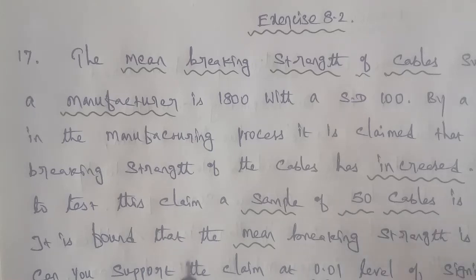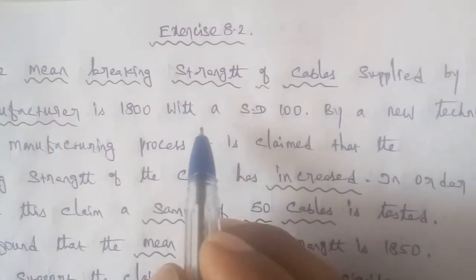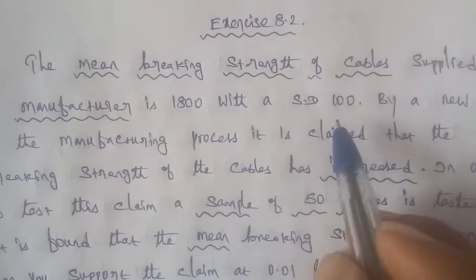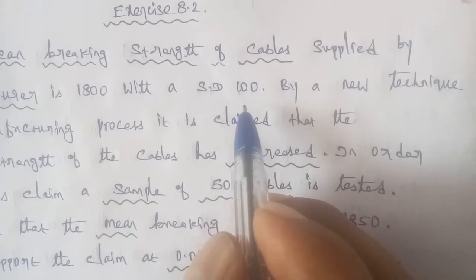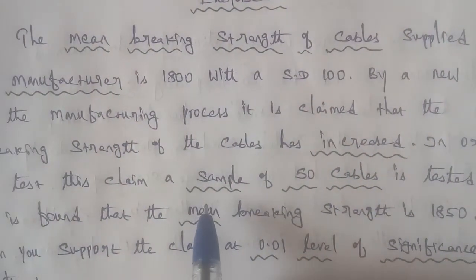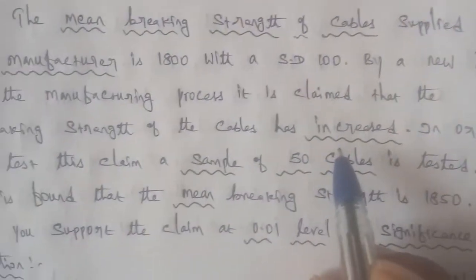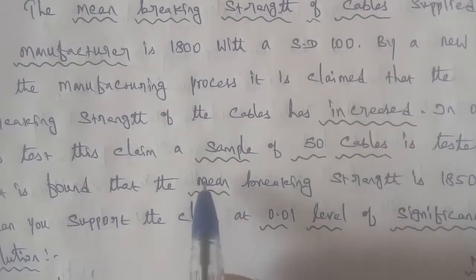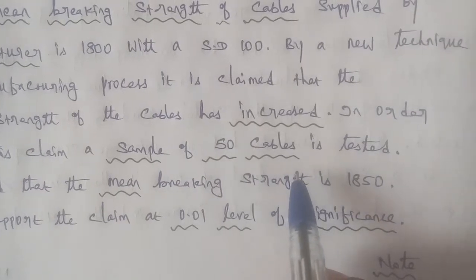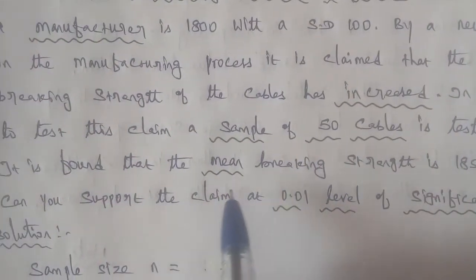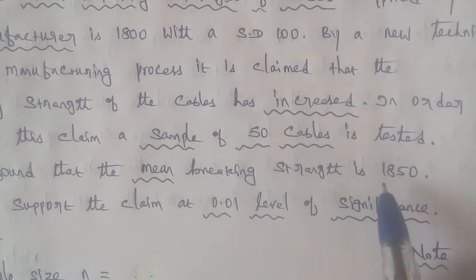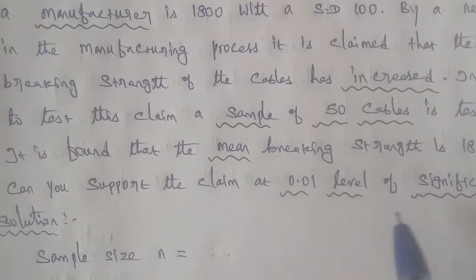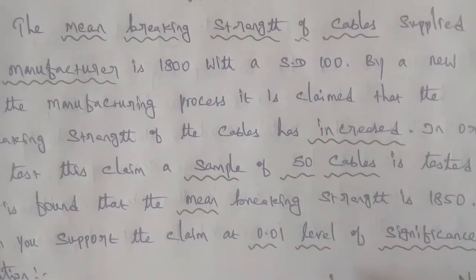Exercise 8.2, question number 17. The mean breaking strength of cables made by a manufacturer is 1800 with a standard deviation of 100. By a new technique in the manufacturing process, it is claimed that the breaking strength of the cables has increased. In order to test the claim, a sample of 50 cables is tested. It is found that the mean breaking strength is 1850. Can you support the claim at the 0.01 level of significance?